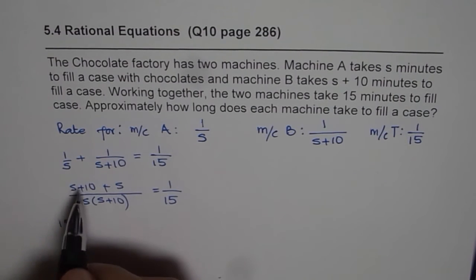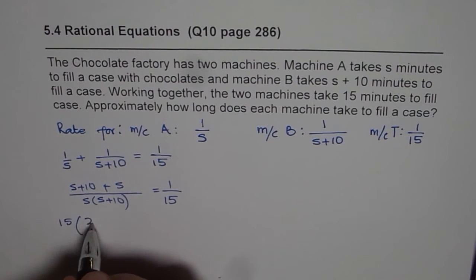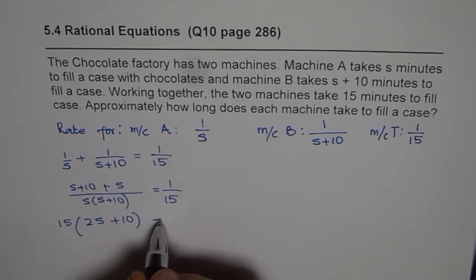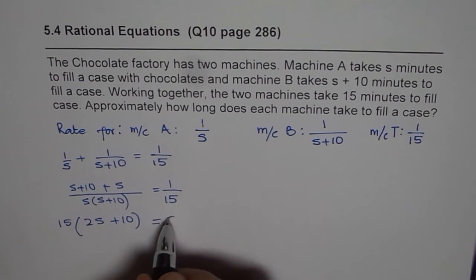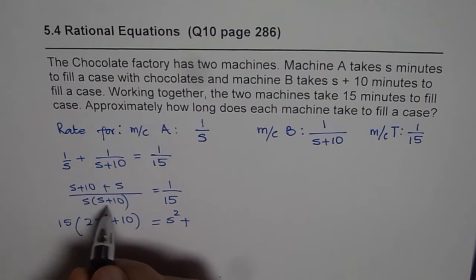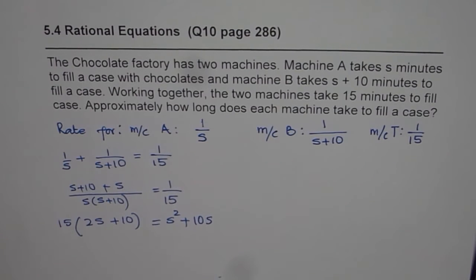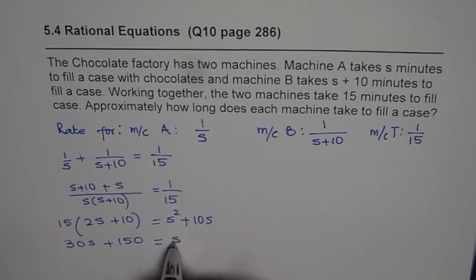So let us cross multiply. So we get 15 times, at this stage I am combining these two s which gives me 2s plus 10 equals to s times s is s squared plus 10 times s is 10s. Well you should do it in steps because I want to finish the problem in half of the page. So I am kind of combining a few steps. Now apply the distributive property, expand and simplify. 15 times 2 is 30. So we get 30s plus 150 equals to s squared plus 10s.